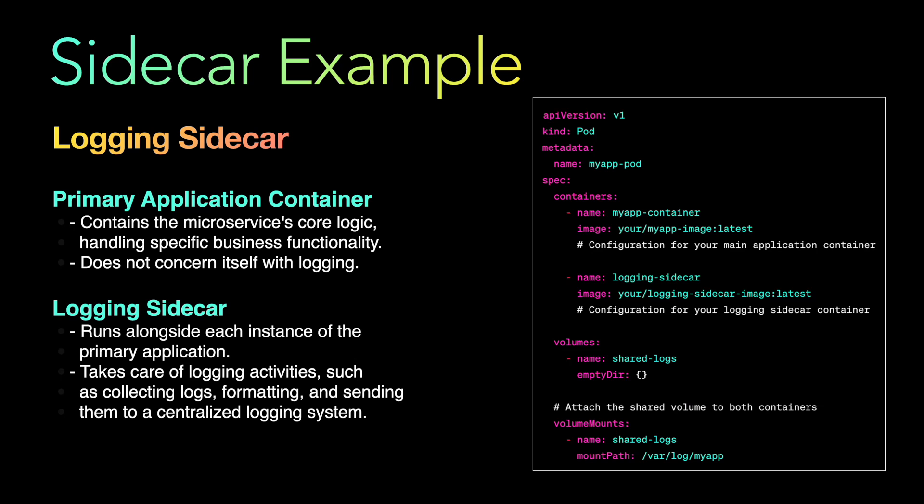The primary application writes logs to a shared volume, and the sidecar container picks up those logs, applies tail and grep operations on the log files, and writes them to a file. The pod contains two containers: the my-app container, which is the primary application, and the logging sidecar. Both containers share an empty directory volume named shared-logs, and the volume mount section mounts the shared volume into a specific path within each container, such as /var/log/my-app.